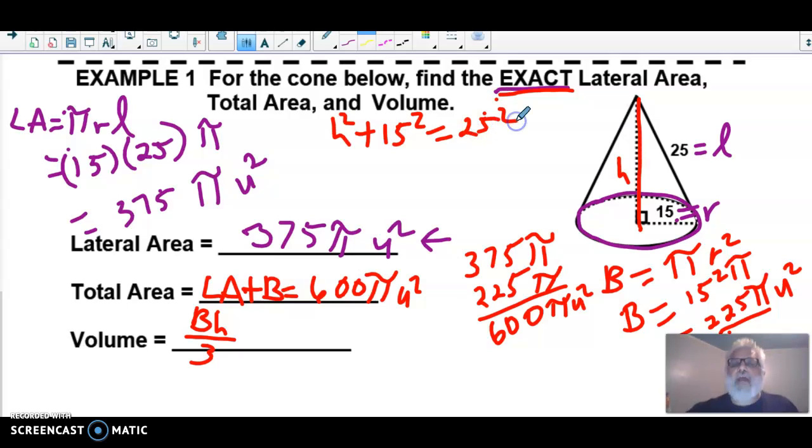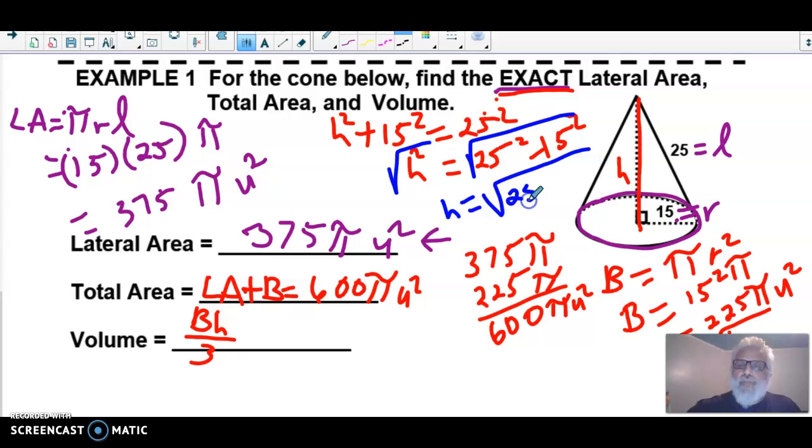And then continue on, next step will be h² is equal to 25² minus 15². And then at this point we will take the square root of both sides and I'll get h is equal to the square root of 25² minus 15². And I'll go ahead and enter that into the calculator.